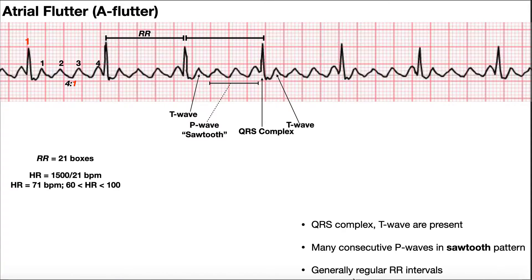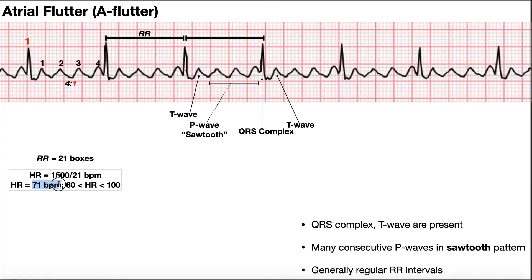Generally with atrial flutter, there's going to be regular R-R intervals, although there does not have to be. This is one example where they are regular, and if they are regular, we can do our typical way of calculating heart rate. So we can count the number of small boxes between two R's. We count over — I've got 21 here. So we take 1500 divided by 21, and that gives us our heart rate in beats per minute: 1500 over 21 is 71 beats per minute.